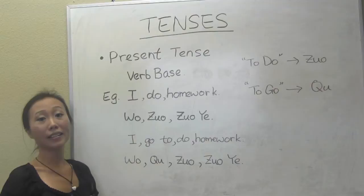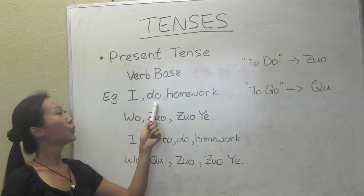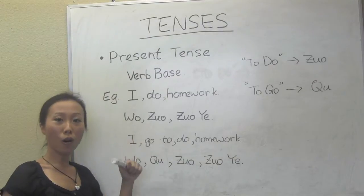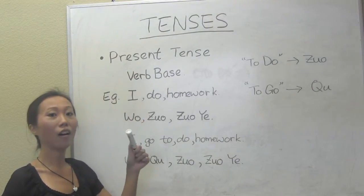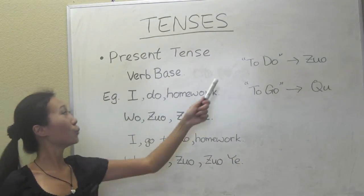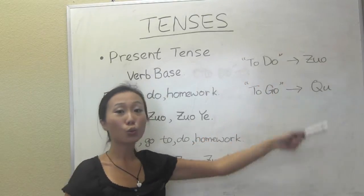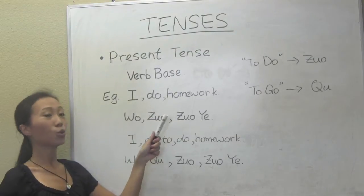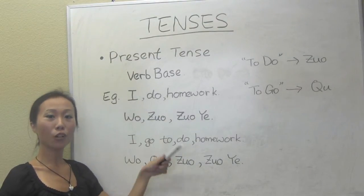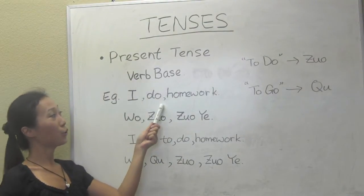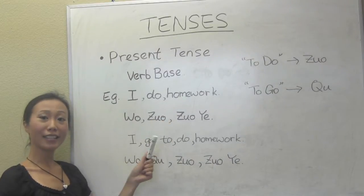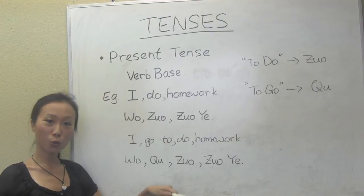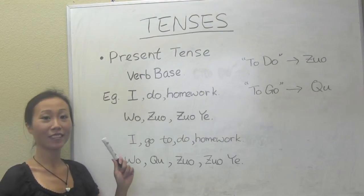Let's look at one example: 'I do homework.' 我 means 'I,' 做 means 'do,' and homework is 作业. So 'I do homework' in Chinese is 我做作业.